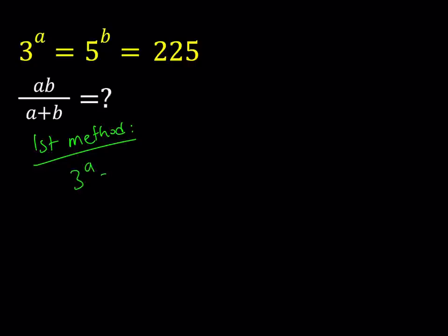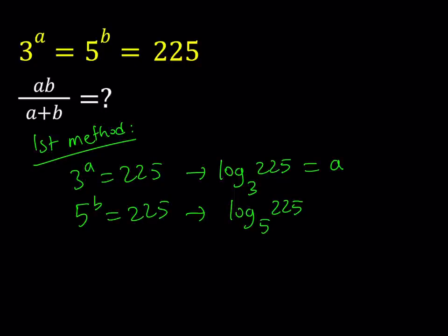Since 3 to the power a is 225, by using the definition of logarithms I can write this as log base 3 of 225 equals a. And since 5 to the power b equals 225, log base 5 of 225 equals b. If you use the definition, you can get these results.